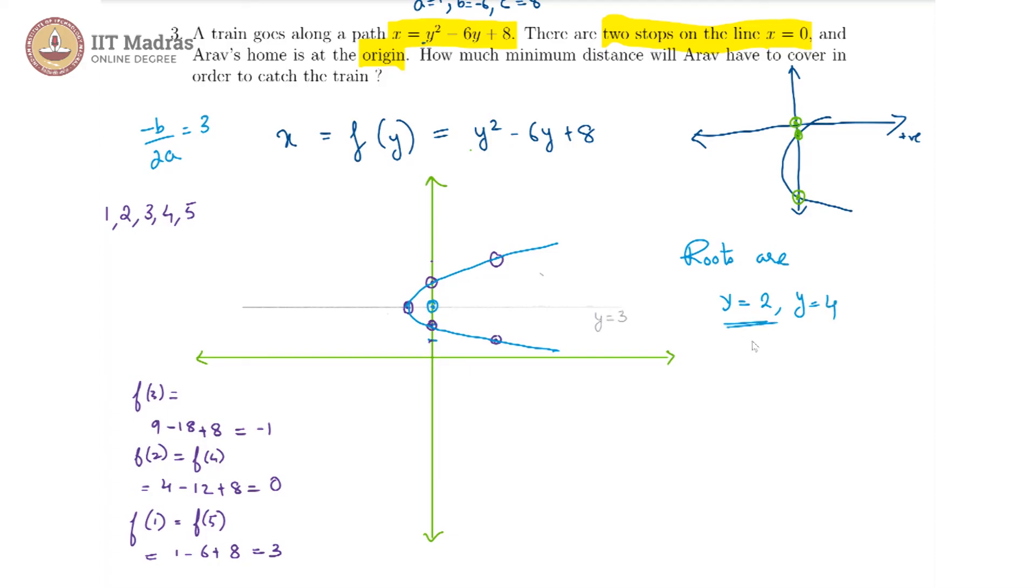Clearly y is equal to 2 is closer to the origin. The minimum distance that Arav will have to cover is 2 units, that is from the origin to this particular point and this is the distance he will have to cover.